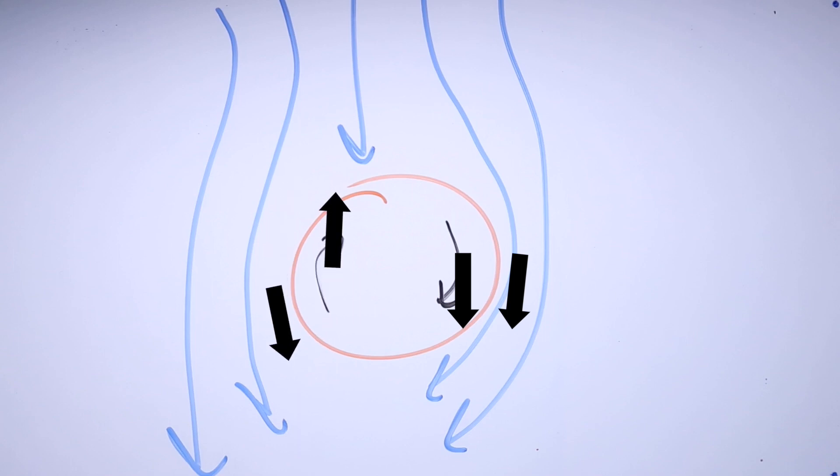On the left side, the opposite directions of airflow and ball rotation cause the flow to separate, creating a dead zone with no interaction.